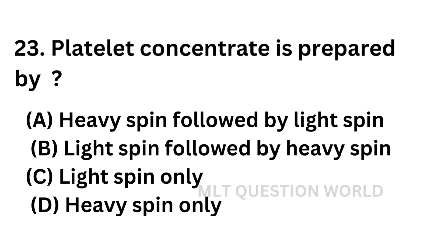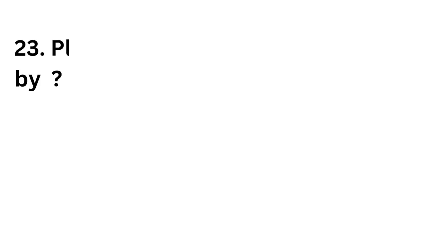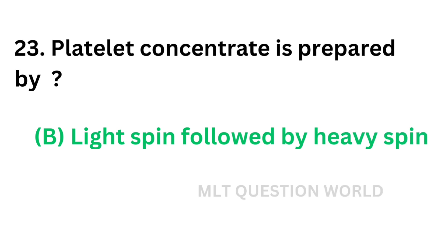Question No. 23. Platelet concentrate is prepared by: Option A: Heavy spin followed by light spin. Option B: Light spin followed by heavy spin. Option C: Light spin only. Option D: Heavy spin only. The correct answer is Option B — light spin followed by heavy spin.